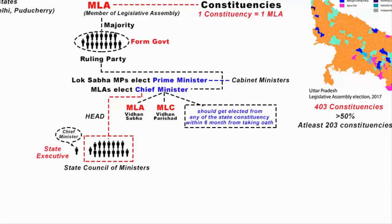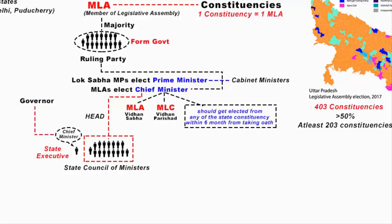The executive power at central level rests with the Prime Minister and the union cabinet ministers. Similarly, once the Chief Minister selects the council of ministers, it is the Governor of the state who appoints the Chief Minister as well as the council of ministers. At central level, once the Prime Minister selects the union council of ministers, it is the President who appoints the Prime Minister and the union cabinet ministers.